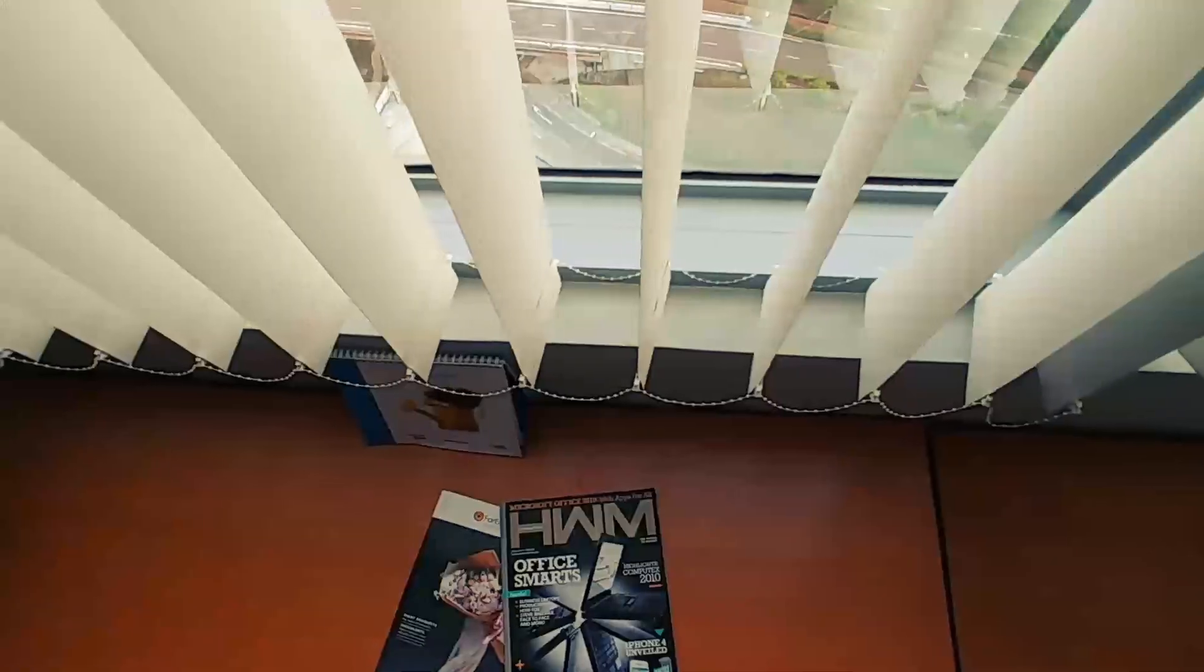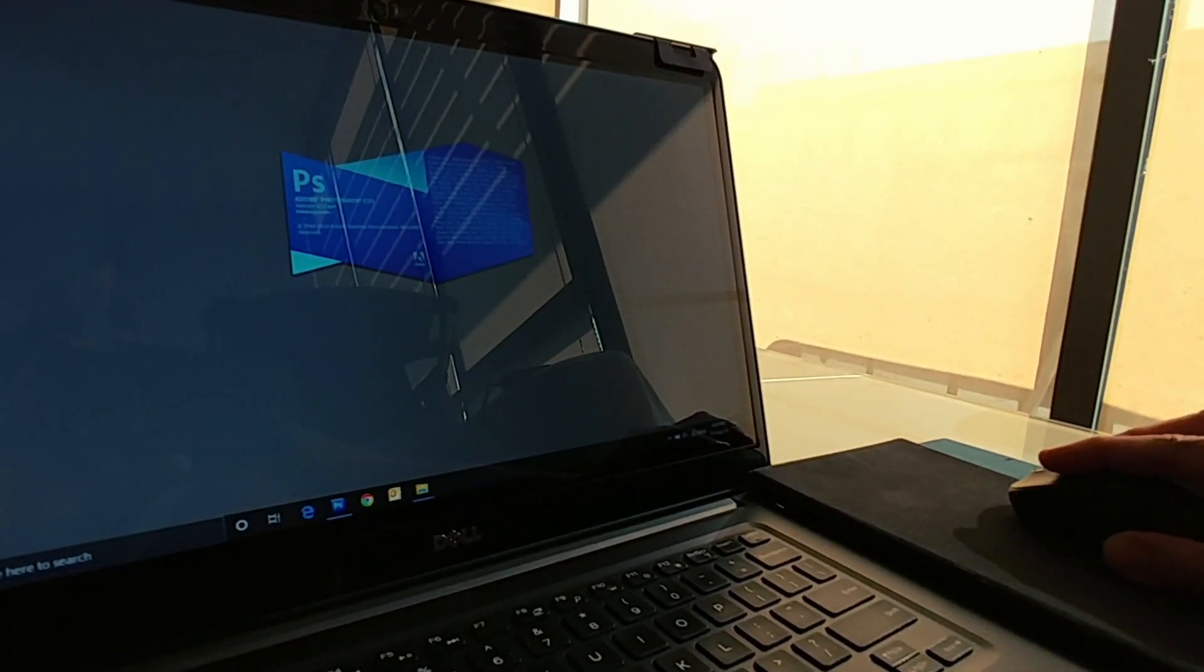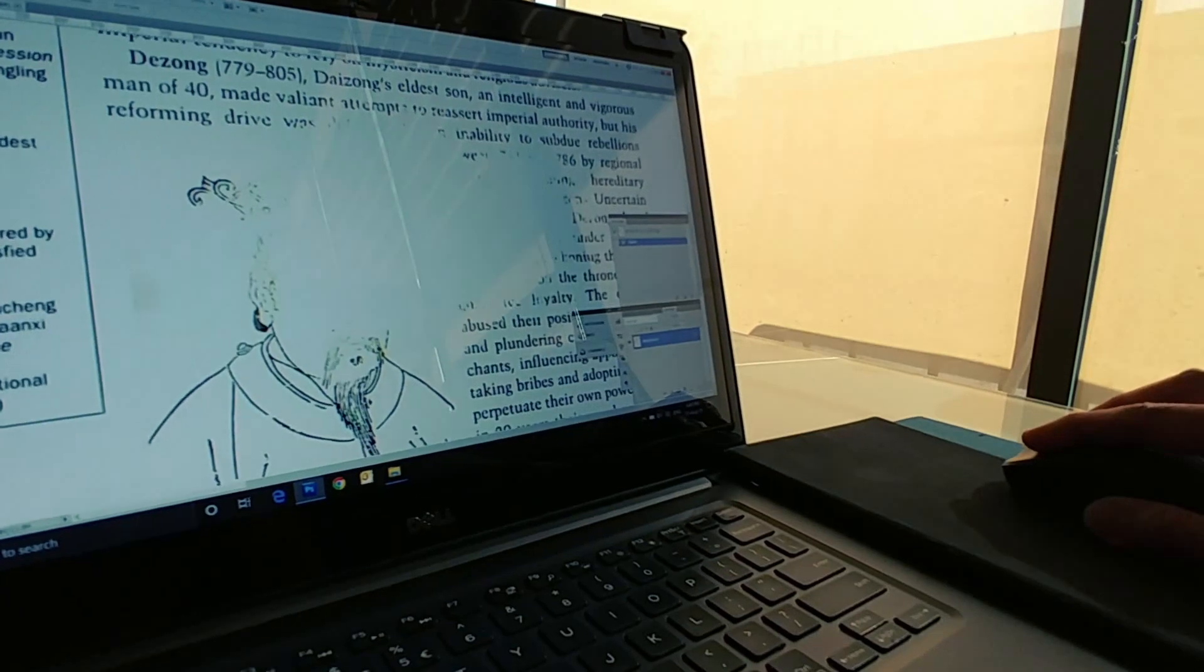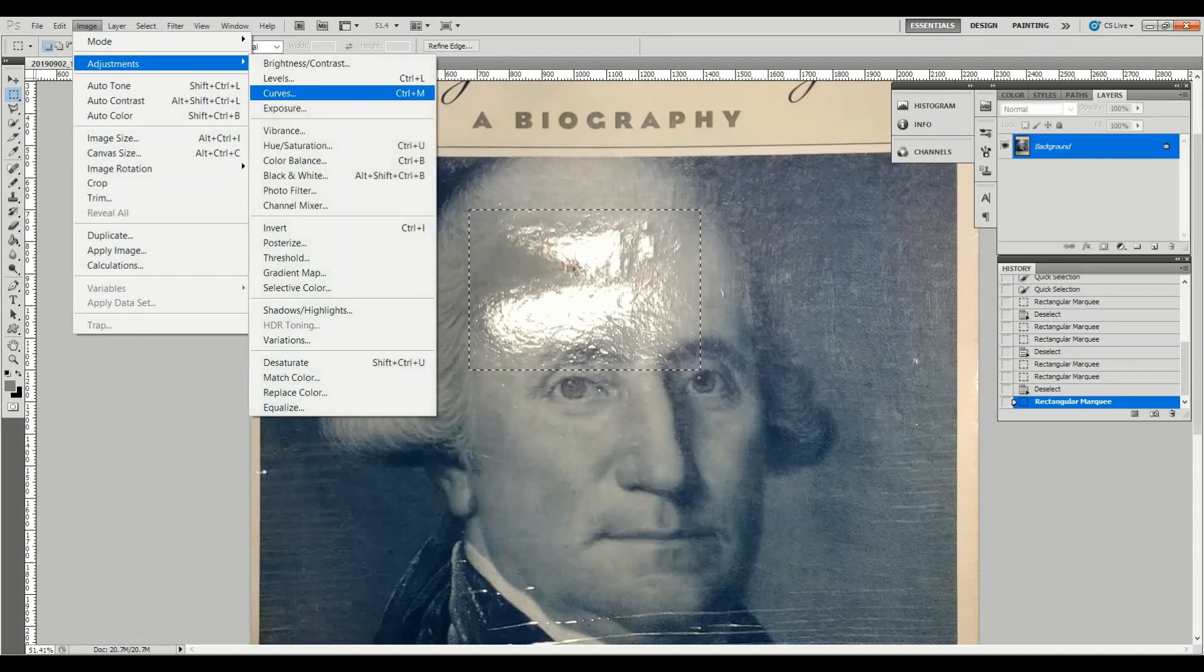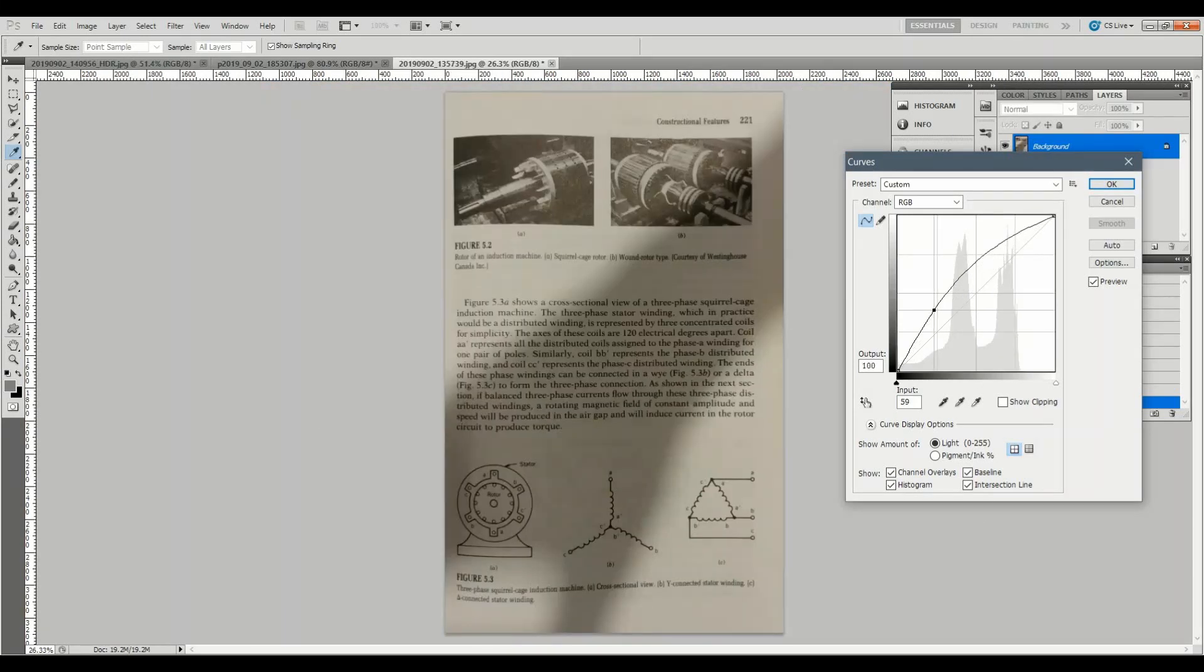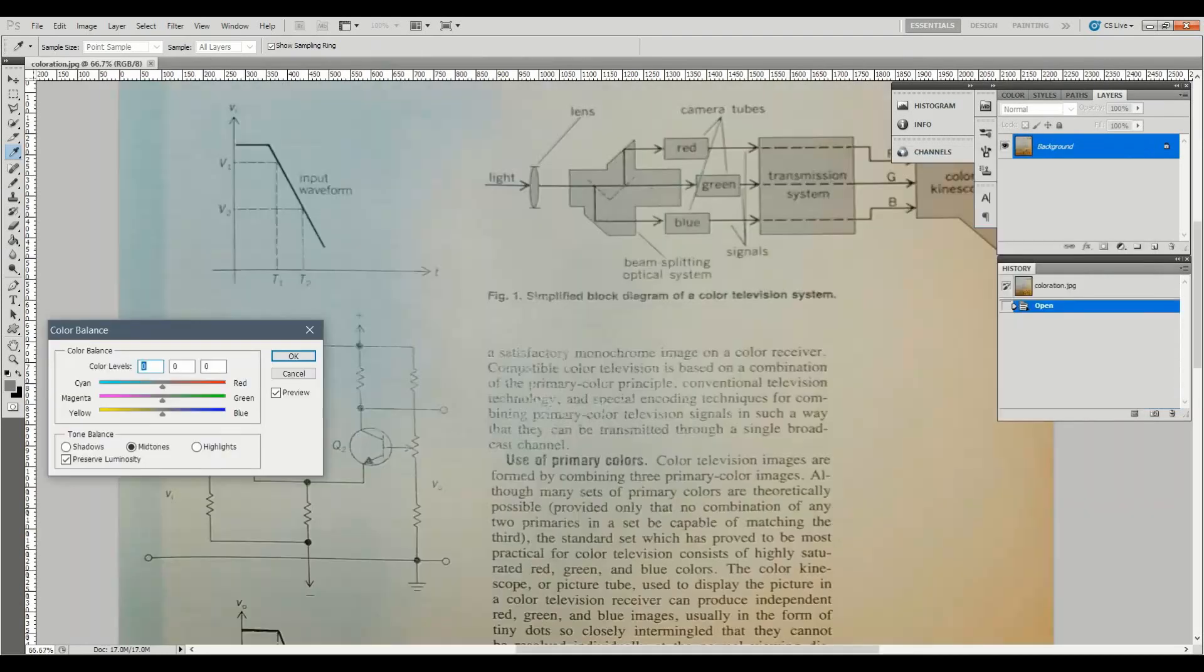When subjected to ambient light, whether natural or indoor, the images we got were deeply tainted by glares, shadows, and coloration. We assumed that software methods could provide some meaningful remedy, but we were so wrong. Glares turned out to be washed out empty patches that couldn't be recovered.